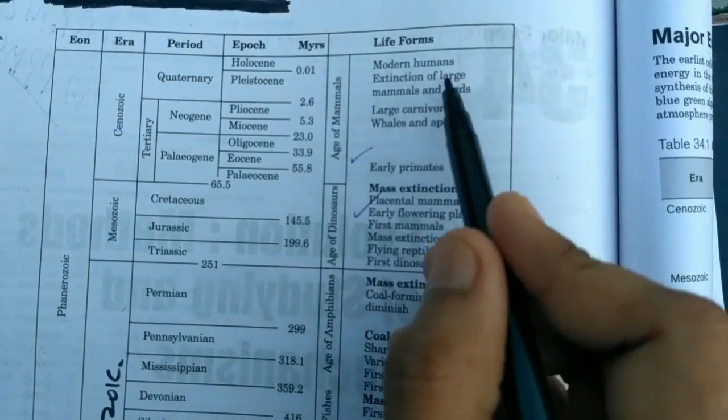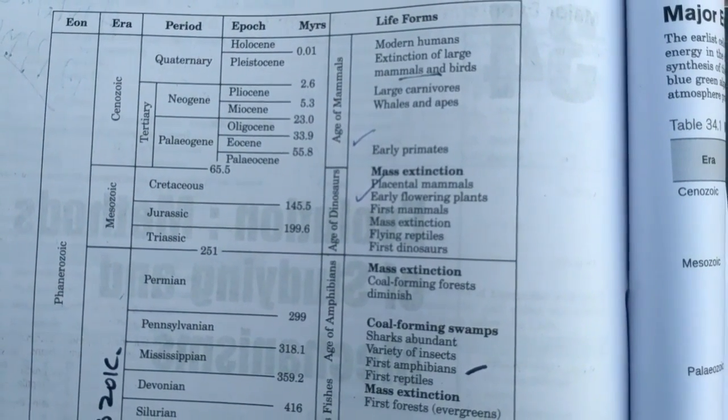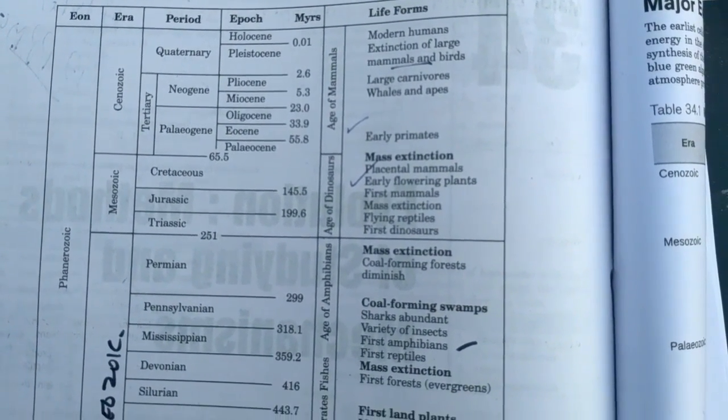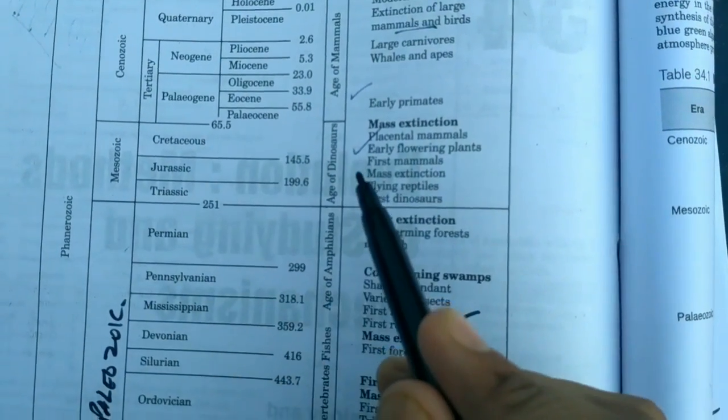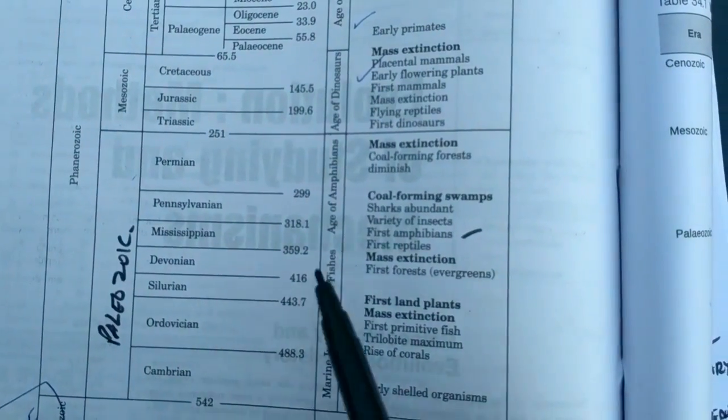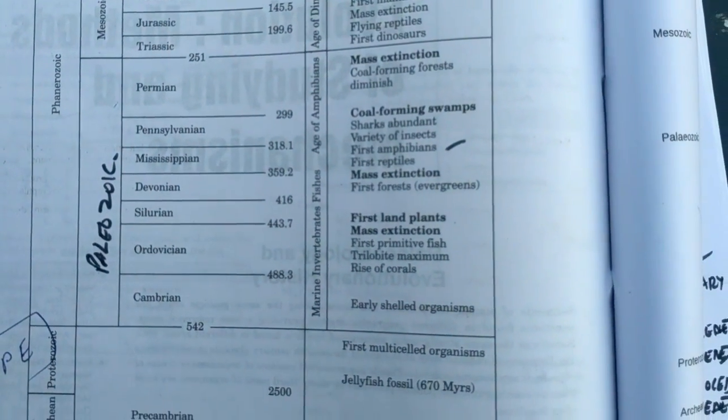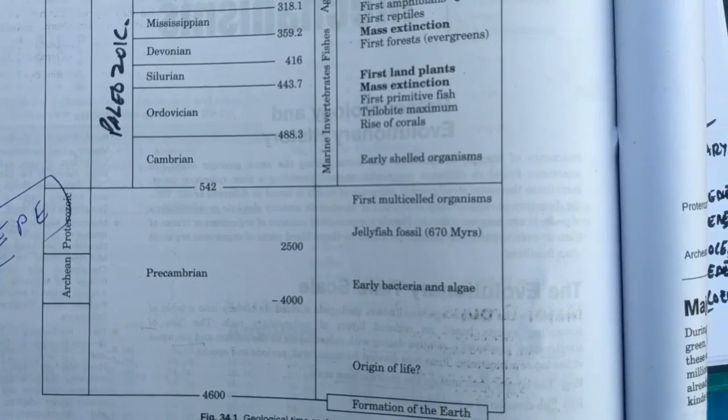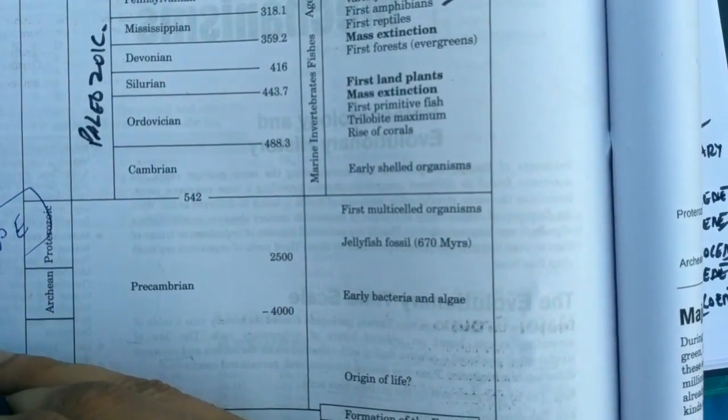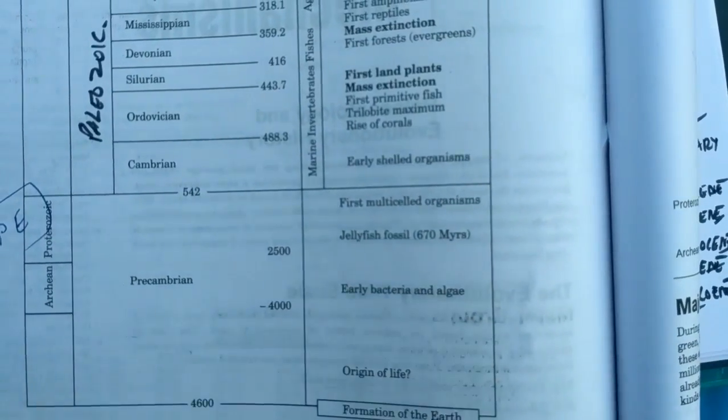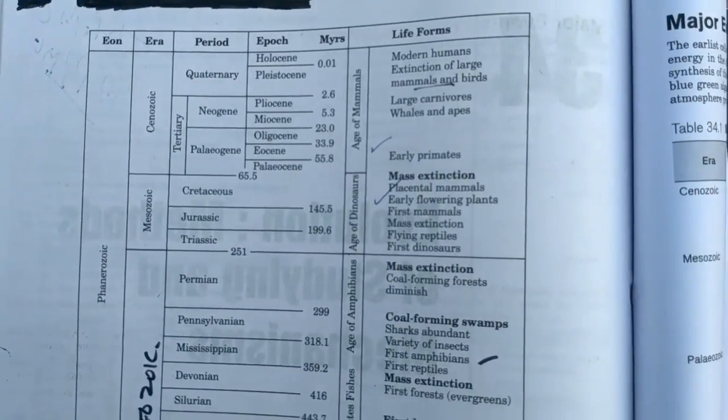In Holocene, extinction of large mammals and birds. Many mammals and birds are extinct in Pleistocene. So it can be regarded as the age of mammals. The Cenozoic is the age of mammals, Mesozoic is the age of dinosaurs, Paleozoic is the age of amphibians and invertebrate fish, and the Archean and Proterozoic is the time of formation of first prokaryotic and eukaryotic cells. I hope it is clear to you.